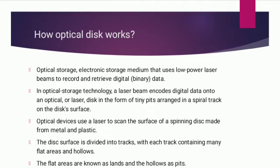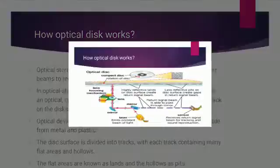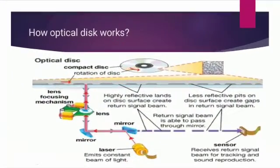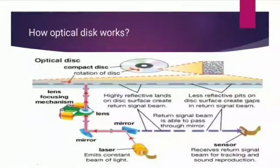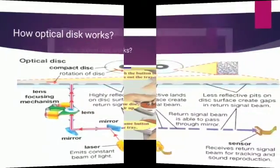Optical devices use a laser to scan the surface of a spinning disc made from metal and plastic. The disc surface is divided into tracks, with each track containing many flat areas called lands and holes called pits. This is the whole phenomenon of how optical disc reading works.